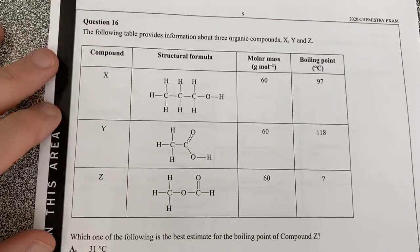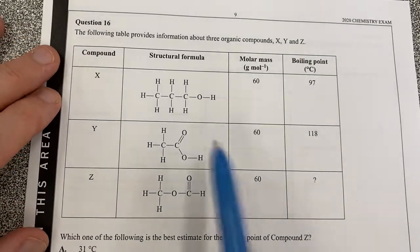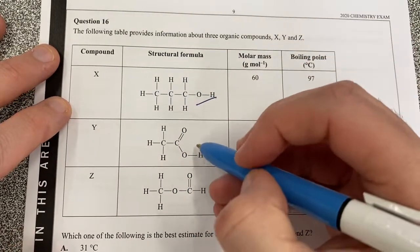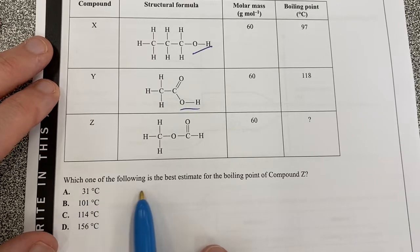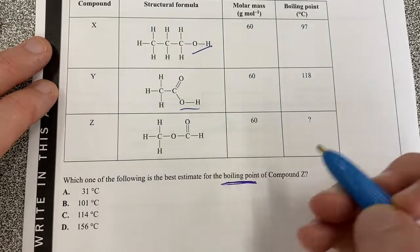Alright, here is question 16, and we've got a table of compounds. We've got an alcohol here, we've got a carboxyl group, and we've got that. What am I looking for? Which one of the following best estimates the boiling point?